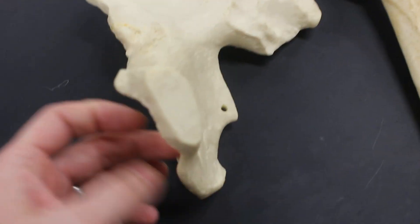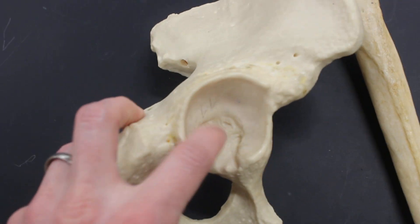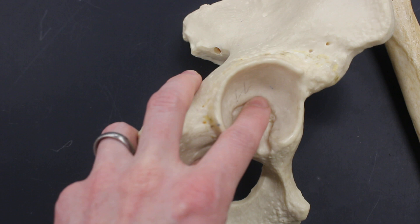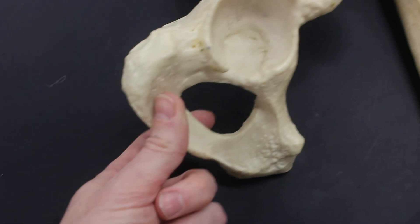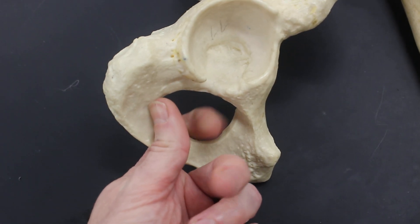And then we also have on this bone, this space, this big cup, which is the acetabulum. And also this large foramen here, the obturator foramen.